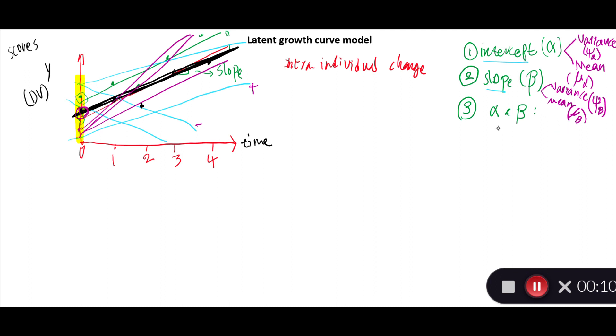And I'm going to write this again: the covariance between alpha and beta is represented by ψ_αβ, like that. So one, two, three, four, and five different parameters or components are considered in doing latent growth curve analysis within the framework of structural equation modeling.